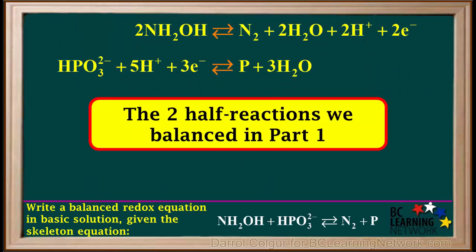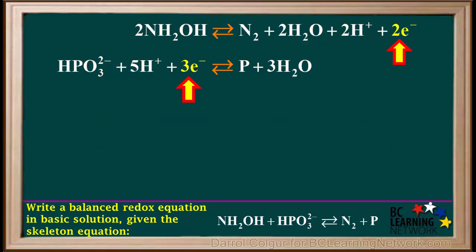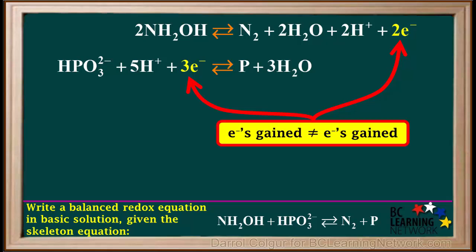Here are the two balanced half-reactions we obtained in Part 1. In order to add these up and obtain the overall redox equation, we must look at the electrons. We see that three electrons are gained by the lower half-reaction and two electrons are lost by the top half-reaction. So, the electrons gained are not equal to the electrons lost. We must multiply these half-reactions by factors which will make the electrons gained equal to those lost.